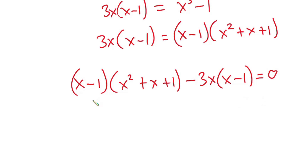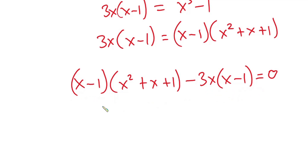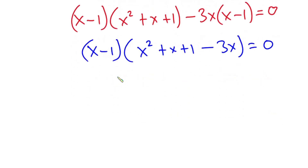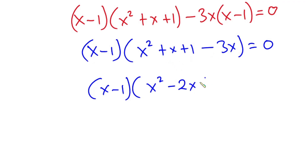Now if you look at this equation, you can see we have x minus 1 here and also the exact same thing over here. So let's factorize it. We have x minus 1 into x squared plus x plus 1 minus 3x, and this is equal to 0. Simplifying, we have x minus 1 into x squared minus 2x plus 1, and this is equal to 0.